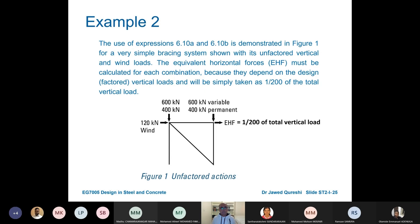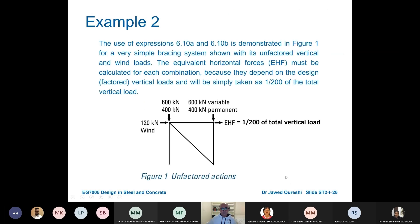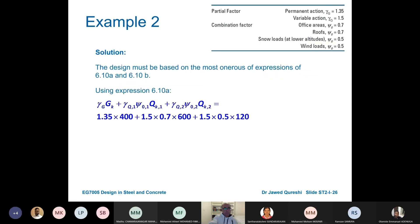Not 6.10. 6.10 is the common one: 1.35Gk plus 1.5Qk. Using 6.10a and 6.10b the key difference is that we have two loads here: we have wind load and we have variable action, permanent action and then we have wind load.